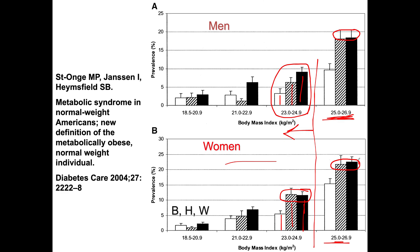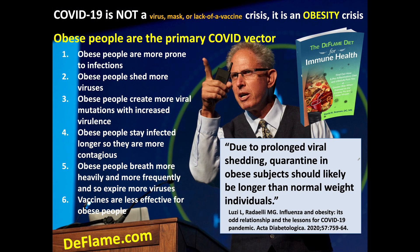These people are at risk for developing the same diseases that overtly obese people are at risk of. This includes COVID-19, because hyperglycemia is the key to really poor outcomes for COVID-19. Scientists note that due to prolonged viral shedding, quarantine in metabolically obese subjects should likely be longer than for normal weight individuals. Obese and metabolically obese people are the primary COVID vector.